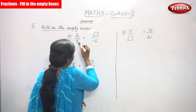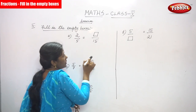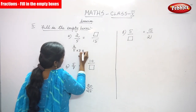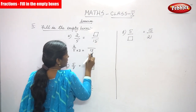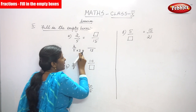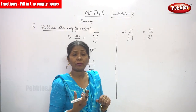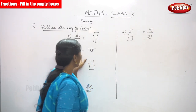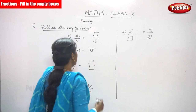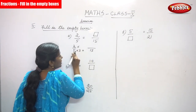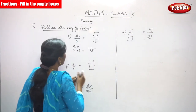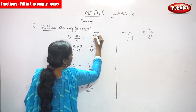So 2 by 5 — the denominator 5 is multiplying to give 15. First we have to find out the multiple: 5 is multiplied by which number? That is 3, so 5 into 3 gives 15. The same rule applies — if the denominator is multiplied by 3, the numerator is also multiplied by 3. So 2 into 3 gives 6. You have to write 6 in the box.